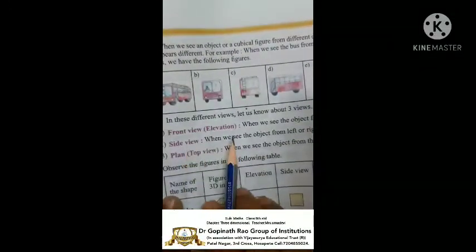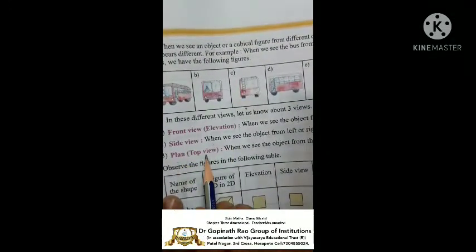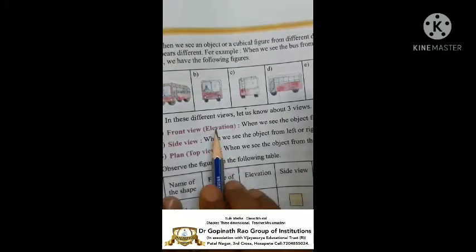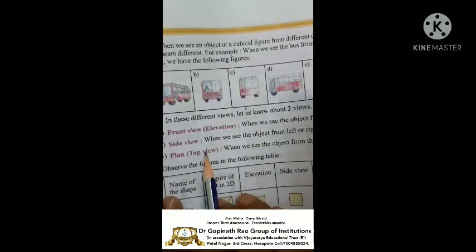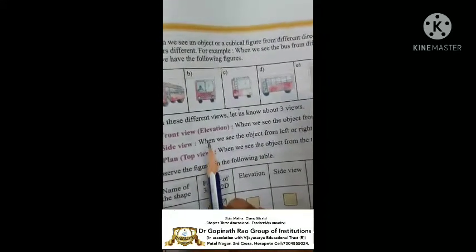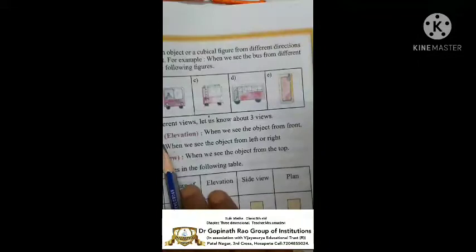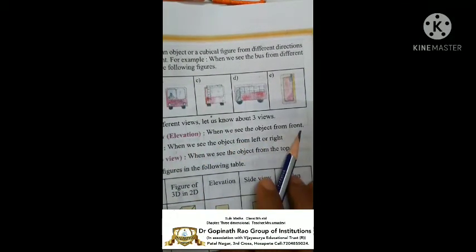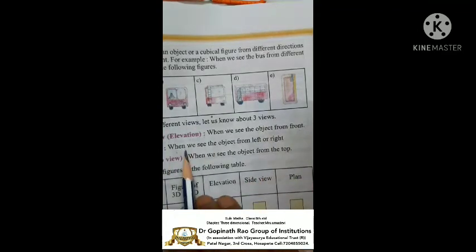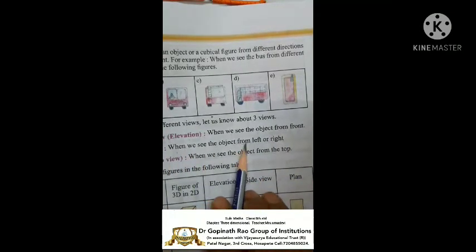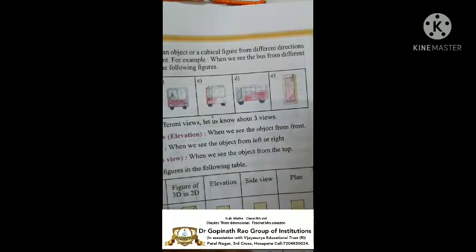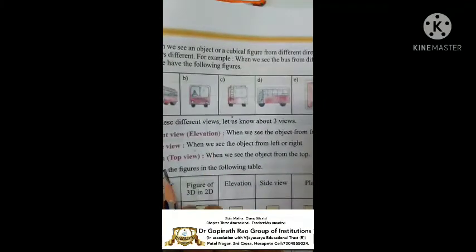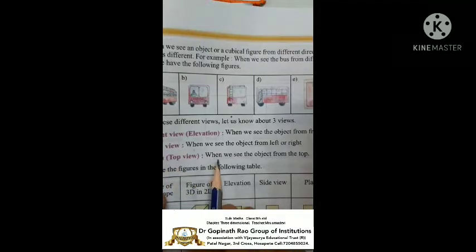Front view, side view, and plan means top view. Elevation means front view; side view means when we view the object from the left or right — both sides. Plan or top view means when we see the object from the top.